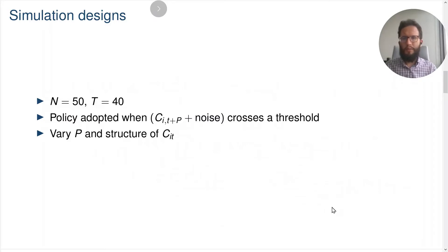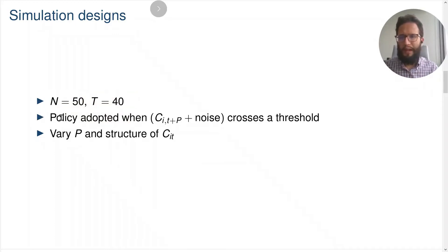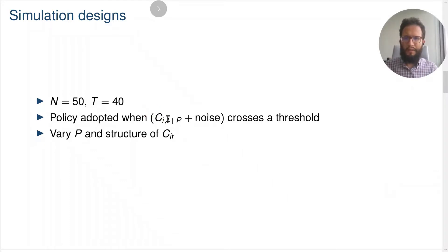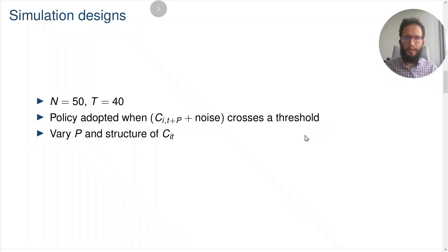Now let me tell you about the simulation designs we're going to use to test the performance of different estimators. Our simulations are inspired by a setting for US states, so we have 50 cross-sectional units in 40 time periods, and we have a setup with endogenous policy adoption. The policy variable is going to be binary — equal to 1 when the policy is adopted and 0 otherwise — and the policy is adopted when the value of the confounding variable C_IT at time t plus p, plus some noise, crosses a threshold. You can think of this process of endogenous policy adoption as a policy maker deciding whether to adopt a policy if their forecast of an economic variable crosses a threshold.